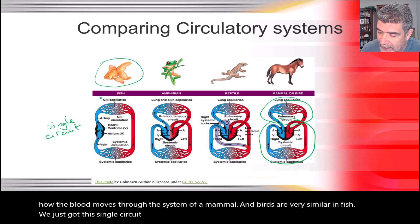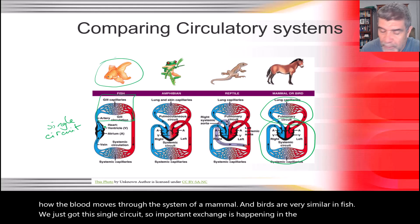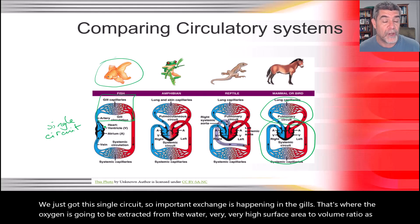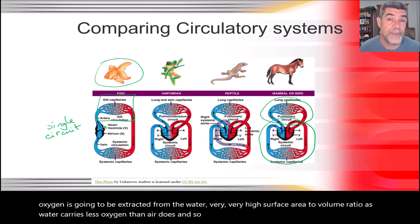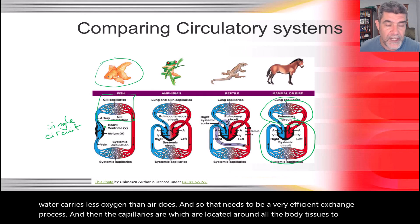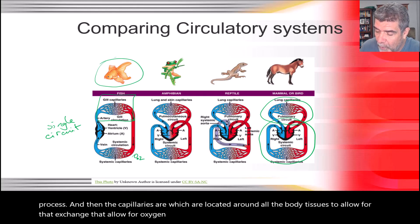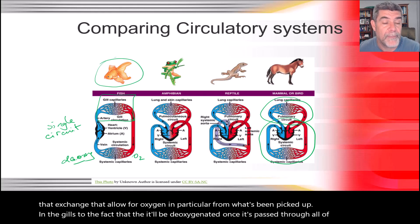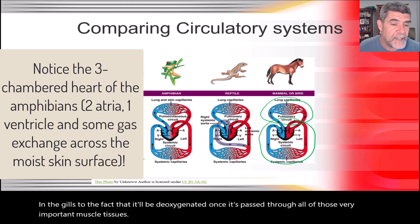Important exchange is happening in the gills — that's where oxygen is extracted from the water. Water carries less oxygen than air, so there's a very high surface area to volume ratio needed for efficient exchange. Capillaries located around all the body tissues allow for oxygen picked up in the gills to be delivered, and the blood becomes deoxygenated as it passes through those muscle tissues.